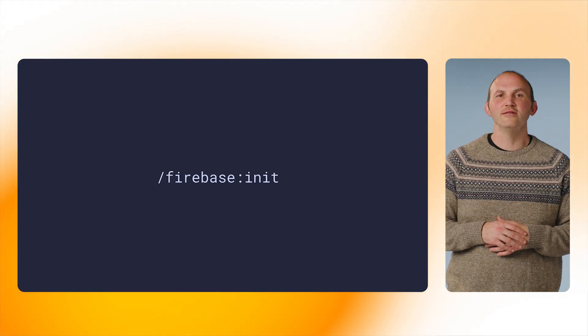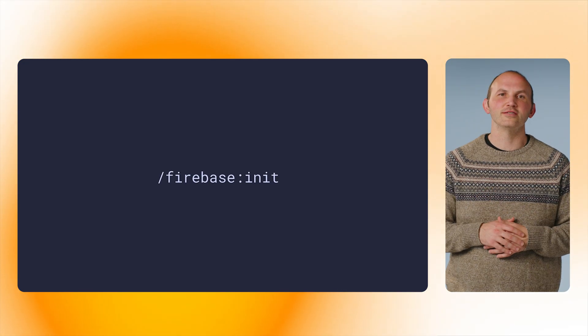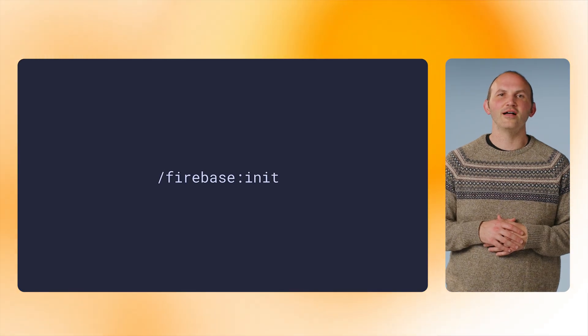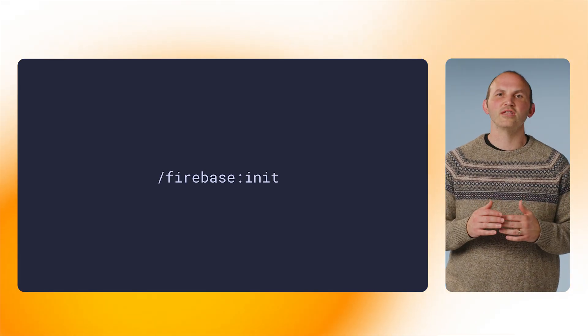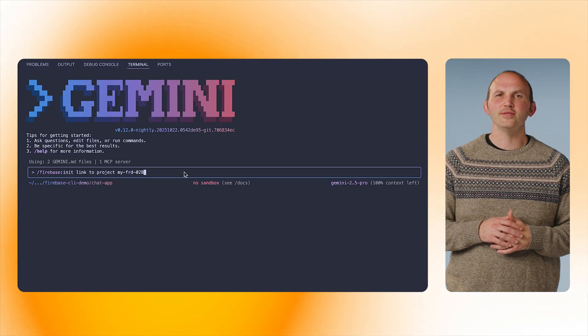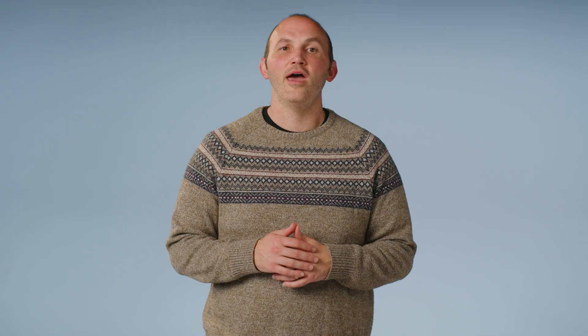We can use the slash command Firebase init to set up a new Firebase project. In this case, I have a project created in the console, but none of the services I want to use are activated. The Firebase init command will log me into the Firebase CLI and then suggest features to add to my app like backend services or AI logic. It will also come up with an implementation plan for those features and go through and activate those backend features in the Firebase console for me. I rarely need to visit the console or ask for a specific Firebase CLI command to get started.